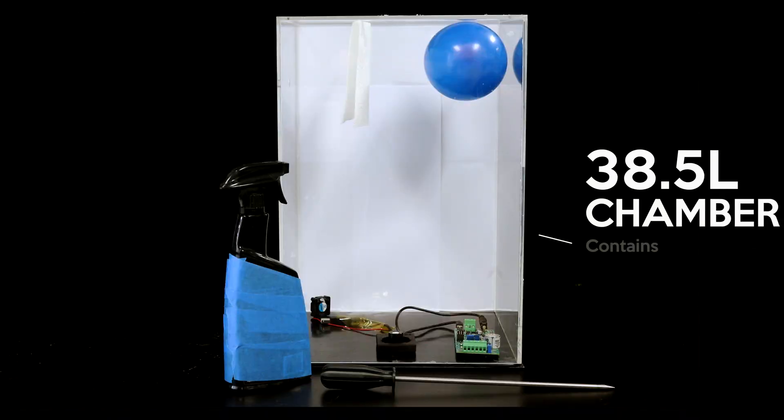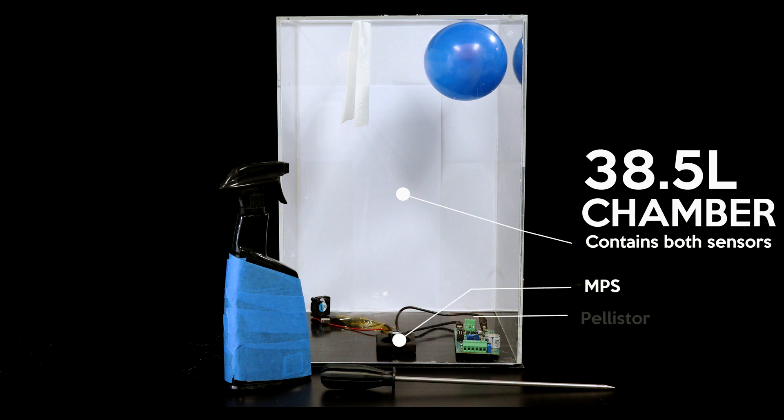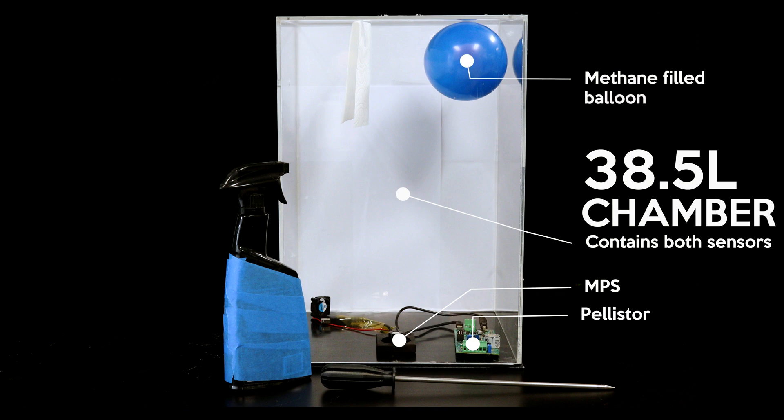This 38 and a half liter chamber contains both sensor types and their evaluation electronics as well as a small fan to mix the gas. The MPS is in the middle front of the chamber and the pellistor is to the right. At the top of the chamber is a balloon filled with methane.